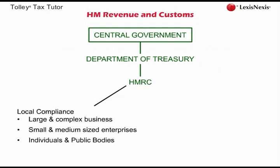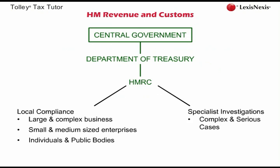Customers in the first two groups have all tax matters dealt with by the same business unit. The local compliance teams also carry out enquiries. The specialist investigations office deals with complex and serious cases not suitable for local compliance due to their size, nature, complexity or seriousness. A two-tier tribunal system comprising the first-tier tribunal and the upper tribunal deals with points of dispute between taxpayers and HMRC.